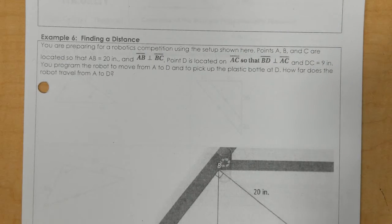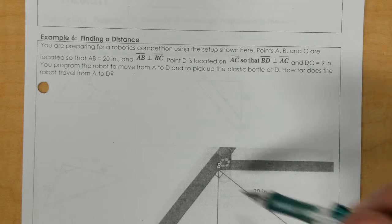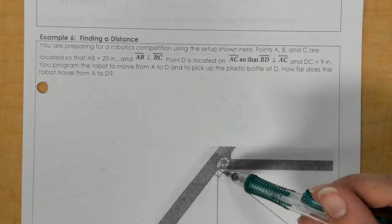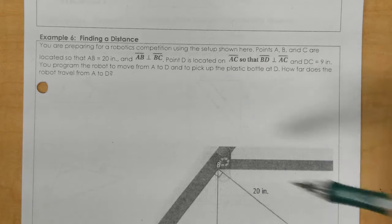You're preparing for a robotics competition using the setup shown here. Point A, B, and C are located so that AB is 20. AB is perpendicular to BC, so it's the right angle. Point D is located at AC, so that BD is perpendicular to AC. So, it creates a right angle. And DC is 9.